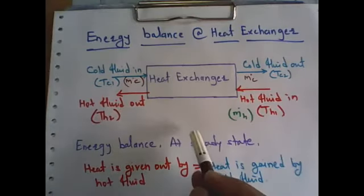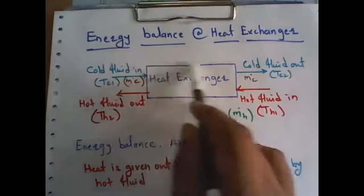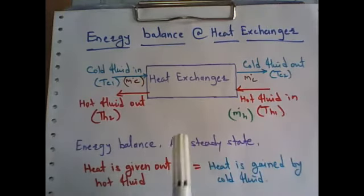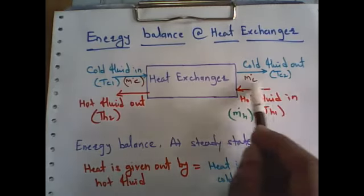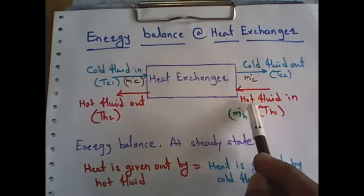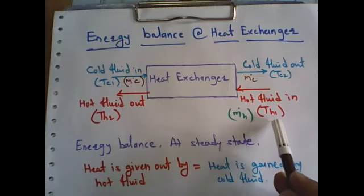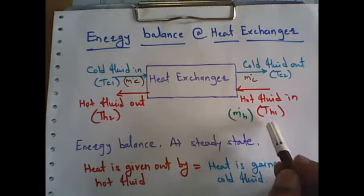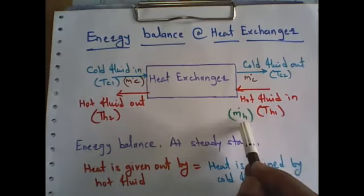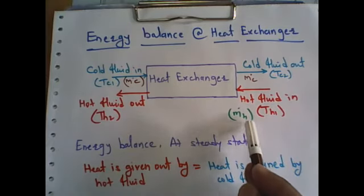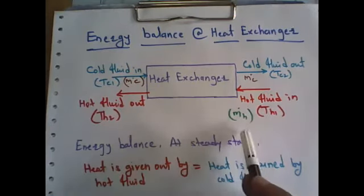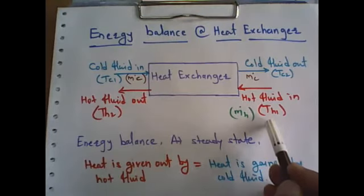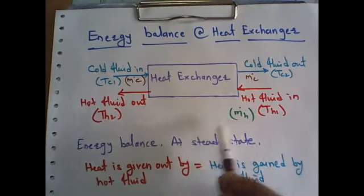We have to focus only on the inlet and outlets and the energies related to them. In the heat exchanger, there are two fluids — one is hot fluid and one is cold fluid. The inlet of the hot fluid is denoted as Th1 (or Thi), and the mass flow rate of the hot fluid is ṁh, where h stands for hot fluid. The hot fluid outlet temperature is Th2, with the same mass flow rate ṁh.